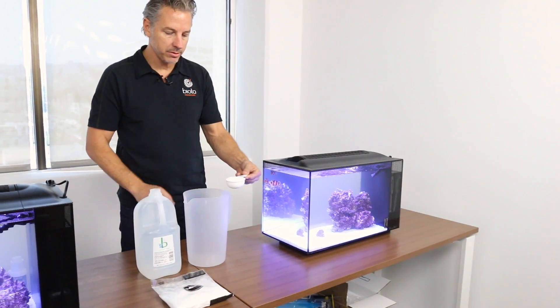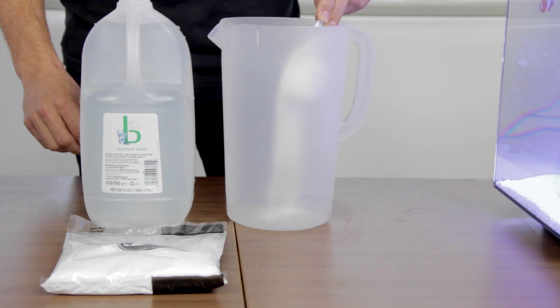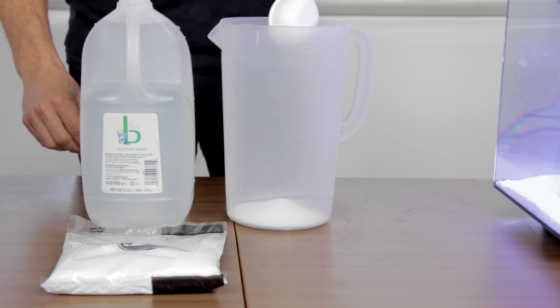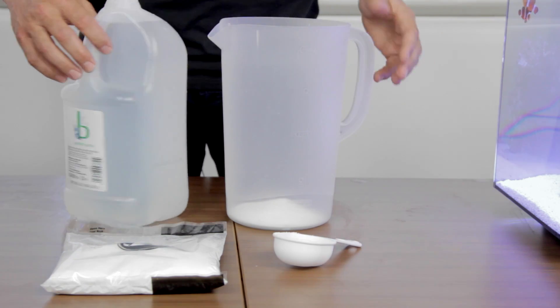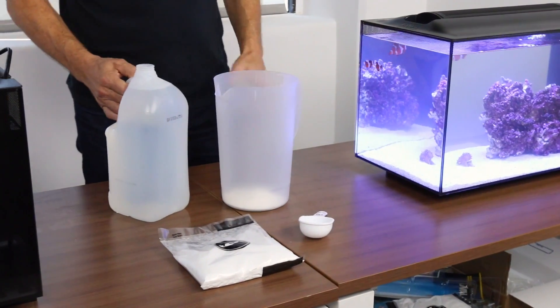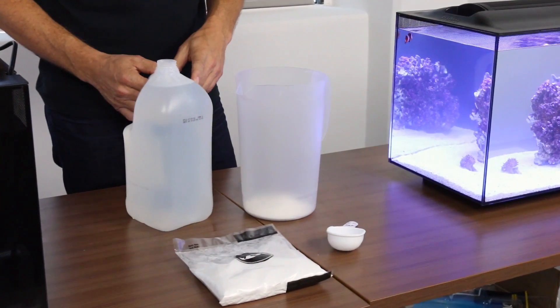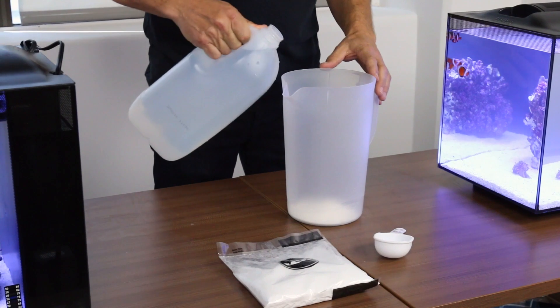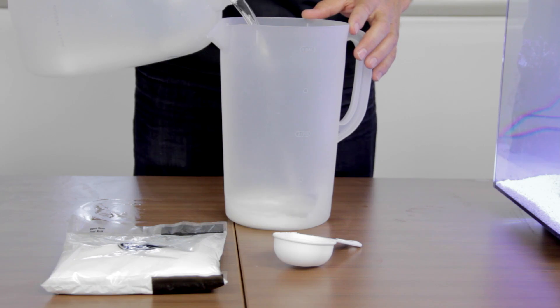This is a one gallon jug, so we're going to carefully add it. And this has been calculated to make the proper salinity for one gallon. We have one gallon of fresh water, preferably filtered, reverse osmosis, or bottled at your local store.